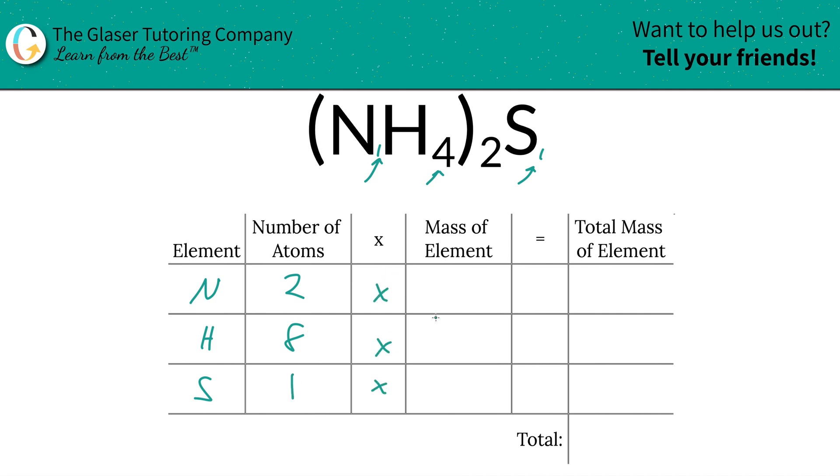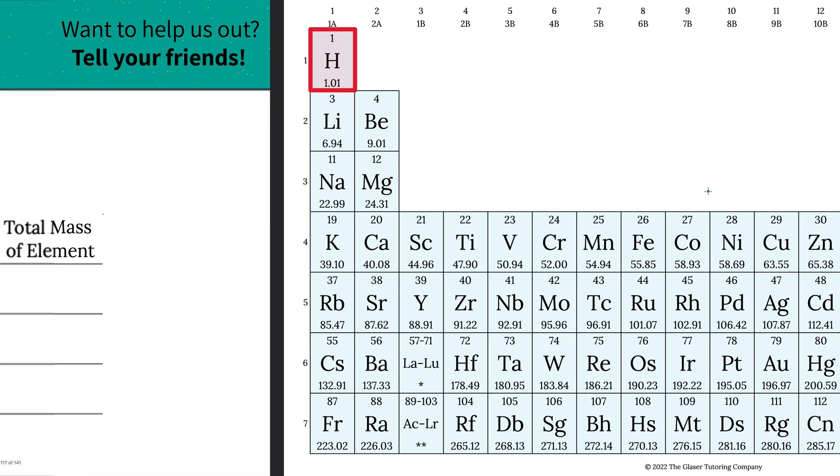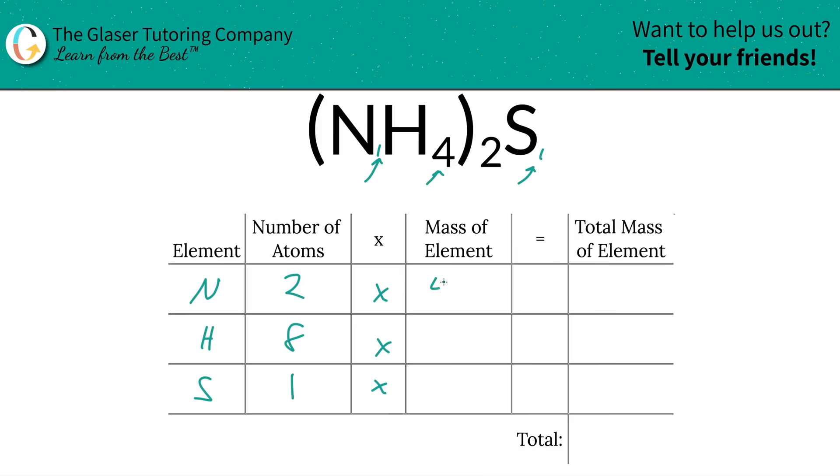Then you're going to take those number of atoms and multiply it by the mass of each particular element. That's where the periodic table comes into play. So here's hydrogen, 1.01, nitrogen is 14.01, and sulfur is 32.07. So those are the values we're going to write down. So we've got 14.01, we've got 1.01, and then we have 32.07 for sulfur.